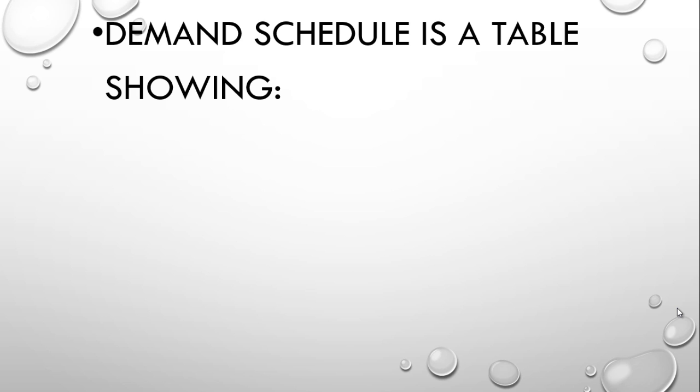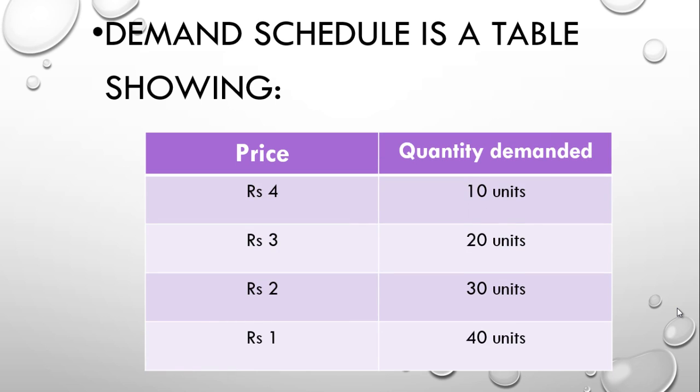Let us see in detail demand schedule. Demand schedule is the table showing graphical presentation of a particular commodity at a particular price. I have given price 4, 3, 2, 1 and quantity demanded is 10, 20, 30, 40. Now this is a demand schedule of Mr. X for a particular period of time. Now you don't have to remember this - you can write any figure, but whatever you write you need to explain in the diagram.